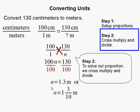And n becomes 1.3 or 1 and 3 tenths as a fraction. So 130 centimeters is equivalent to 1.3 meters or 1 and 3 tenths of a meter.